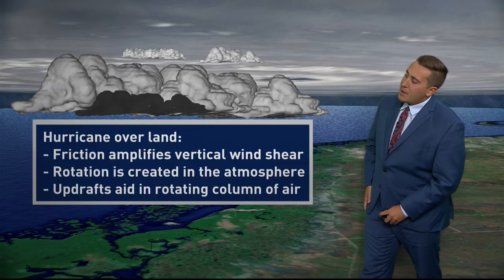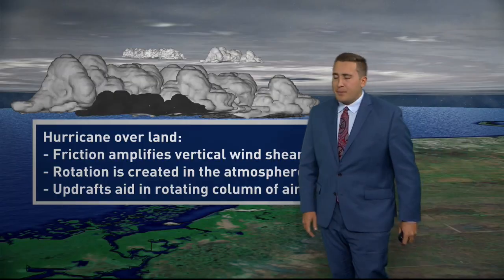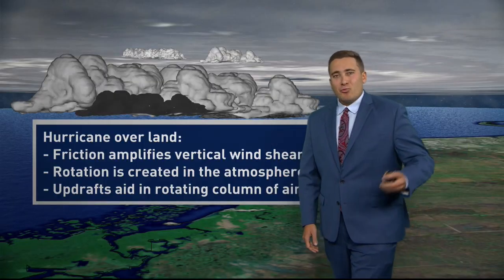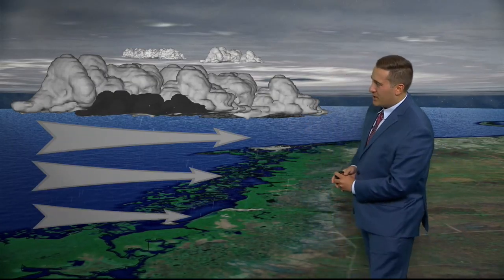Rotation is created in the atmosphere as a result of that, and the updrafts aid in rotating that column of air so it becomes vertical, and eventually we get tornado formation.